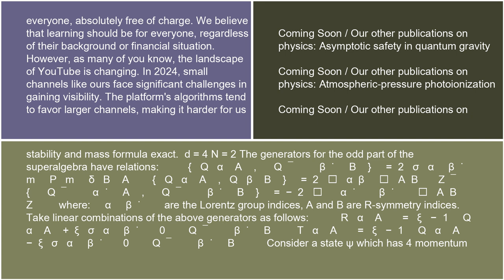Here, alpha and beta are the Lorentz group indices, and a and b are R-symmetry indices.